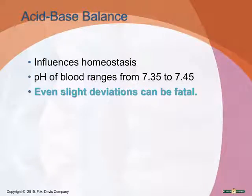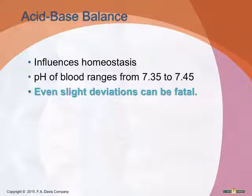Acid-base balance: the pH of blood ranges from 7.35 to 7.45 — a very narrow range. Even a slight deviation from this can be fatal if not corrected. The body uses chemical buffers and physiological buffers to keep acid and base in balance.